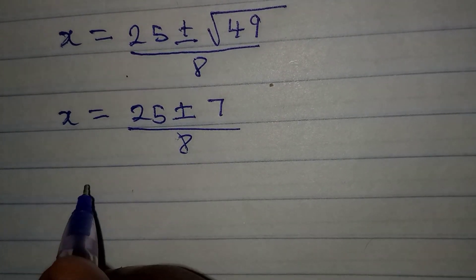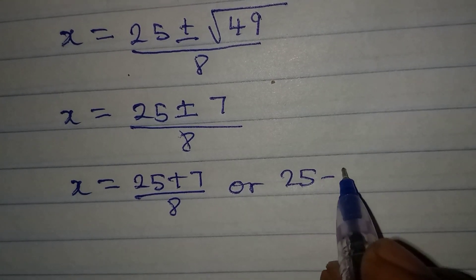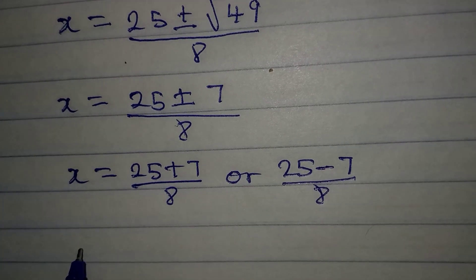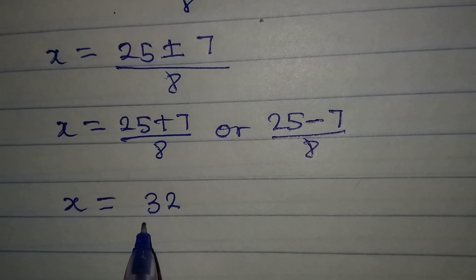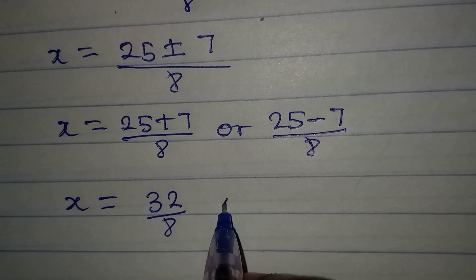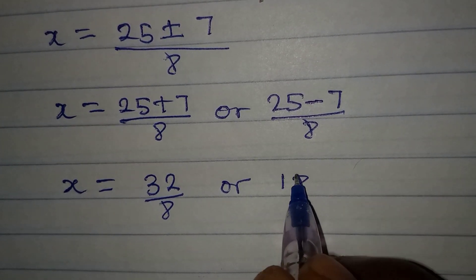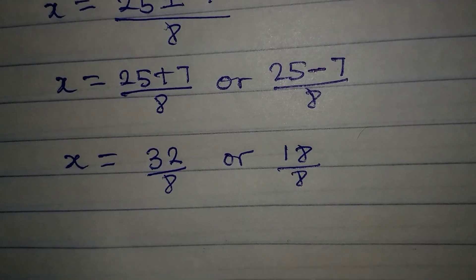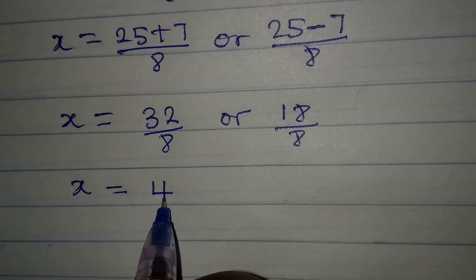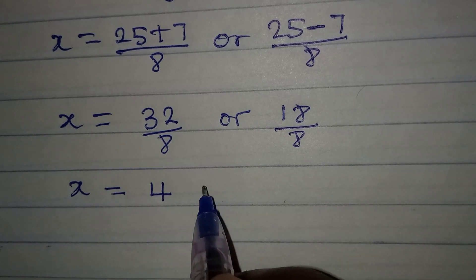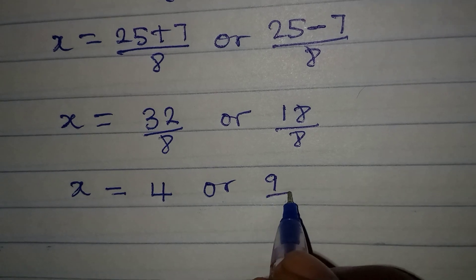Since the square root of 49 is 7, x equals 25 plus or minus 7 over 8. This means x equals (25 plus 7) over 8 or (25 minus 7) over 8, giving x equals 32 over 8 or 18 over 8. So x equals 4 or 9 over 4.